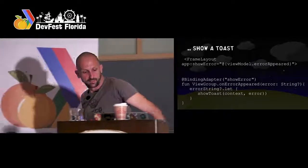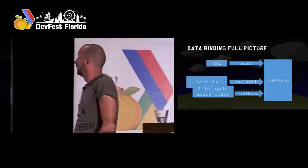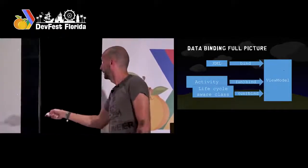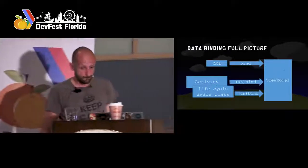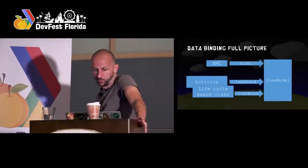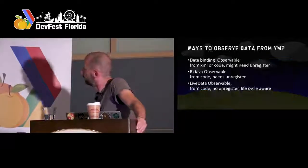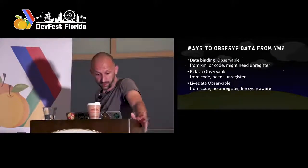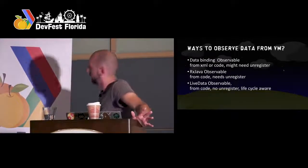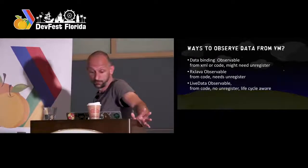So to summarize: you could bind from the XML using data binding, you could bind directly from the activity — but better use lifecycle-aware classes if you want to. With data binding you don't need to unbind. We basically have three ways to bind data from a ViewModel: using data binding, using RxJava, or using LiveData. You can totally pick whichever is your favorite.